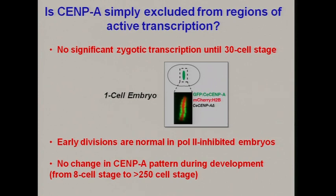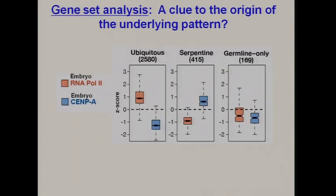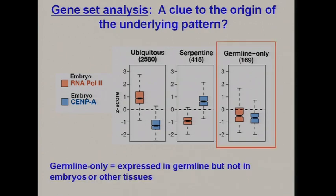There's also no change in CENP-A pattern during development from the early 8-cell stage to the greater-than-250-cell stage, even though gene expression patterns are very dynamic. These observations all argue against the simple model that polymerase is just displacing CENP-A. The clue to what might be going on came when we started dividing up genes in embryos and asking about the relationship between RNA-POL2 and CENP-A in different gene categories.